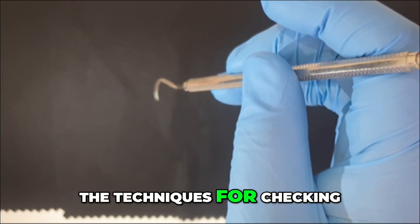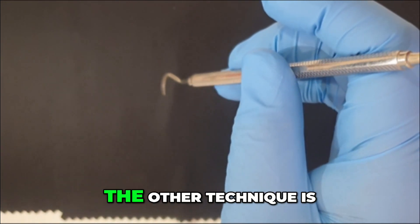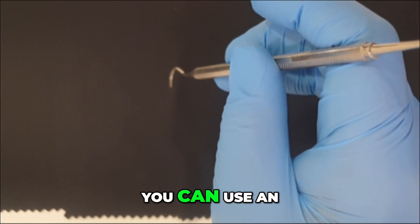This is one of the techniques for checking the sharpness of the instrument. The other technique is, you can use an acrylic stick.